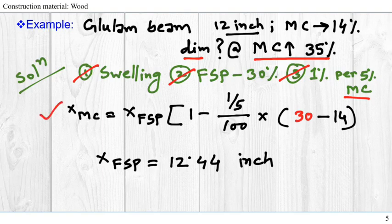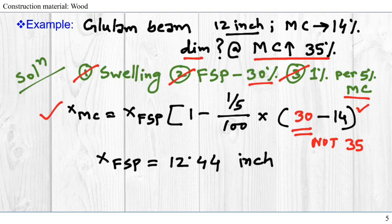Now we have our equation. We put the rate 1 per 5 moisture content over 100%. Now here, you see we use 30% but not 35%, because above FSP there is no effect. So we use 30%, and the initial moisture content was 14%.